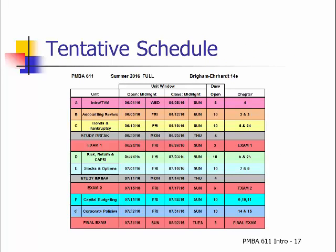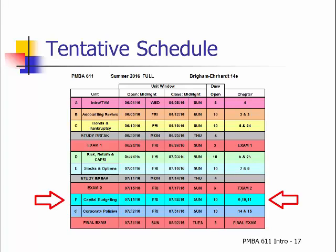This is the tentative schedule for the course — it's also posted in Blackboard. Barring any problems, we'll follow this schedule exactly. The first unit, unit A, covers only one chapter — the time value of money — which should be a review for all of you. That will get us started on a light note and give everyone a chance to access all the materials and work through any problems early on. Units open on a Friday at 12 a.m. and close on a Sunday at 11:59 p.m., giving you 10 days for each unit except unit A. Note that unit F covers three chapters within the same 10-day time frame.